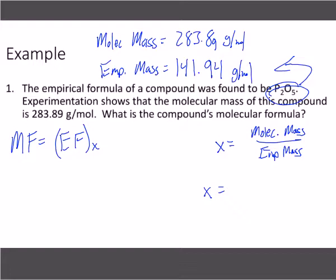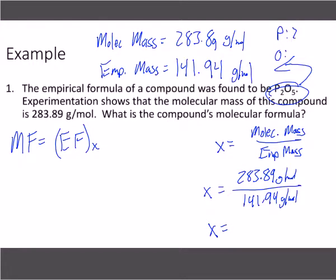So now we're just going to figure out how those two masses relate. So I'm going to plug it in. X equals 283.89 grams per mole divided by 141.94 grams per mole. I took my empirical formula and then I just did the molar mass. So I didn't show the work for it, but you take your P, oxygen, two times the molar mass. Just go through that process. I just didn't show the step here. Good question.